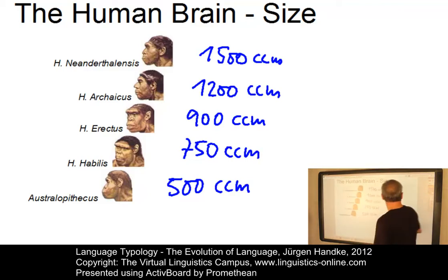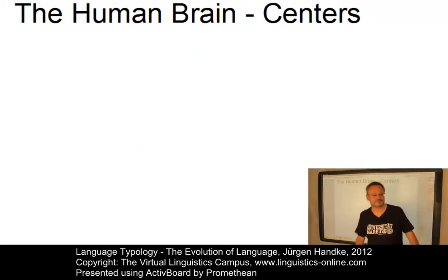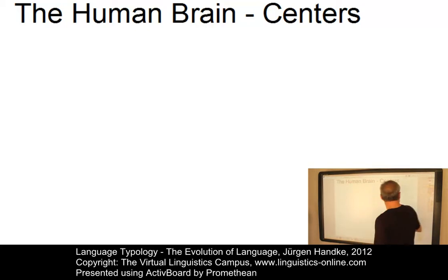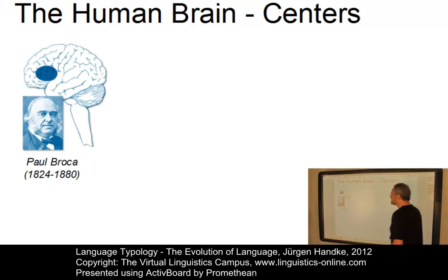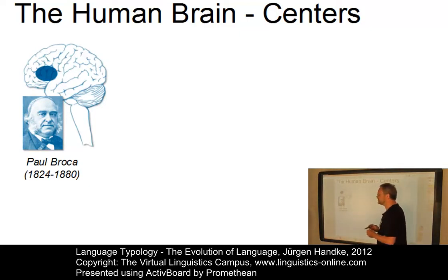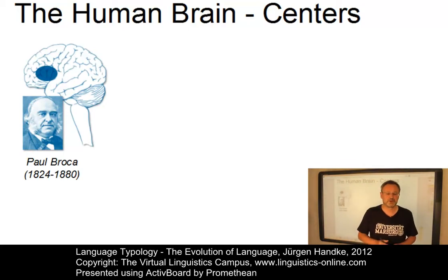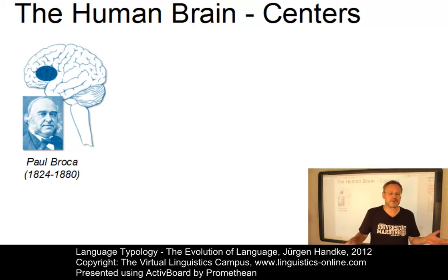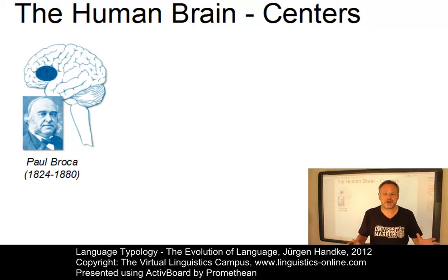Three brain centers are primarily responsible for the production and comprehension of speech. The first is referred to as Broca's area, found in the front of the left hemisphere of the cortex. Named after the French physiologist Paul Broca who lived in the 19th century, it is commonly known as the motor center for speech. According to recent insights, Broca's area is responsible for several aspects such as word associations, ordering principles, and speech output.